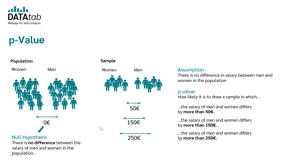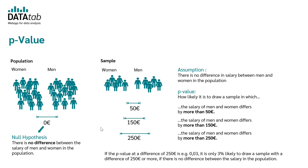So what does that mean now? Let's say that you calculate the p-value for a salary difference of 250 euros, and you get the result that the p-value is 0.03.